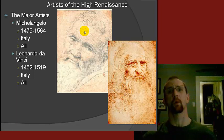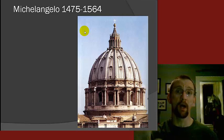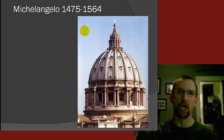We're going to take a look at three or four different things from each guy and talk about what makes each of those things a piece of the Renaissance. First, let's start with Michelangelo. This is called the Dome of St. Peter's Basilica — write that down: the Dome of St. Peter's Basilica, B-A-S-I-L-I-C-A.